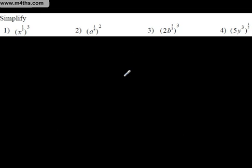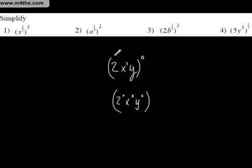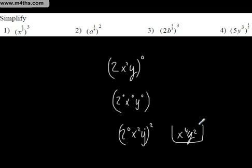Just a couple of other parts here. If we have 2x squared y to the power of 0, then what we end up with is 2 to the 0, x to the 0, y to the 0, which means all of this is just going to be 1. That whole bracket, even before you start, becomes 1. On the other hand, if you had 2 to the 0, x squared y to the power of 2, then this is going to be 1, but we get x to the 4th, y squared. So just be careful with your rules of indices.